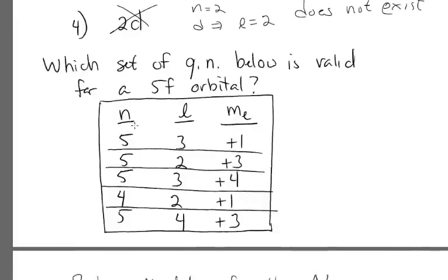For a 5f, the n value is five, so it could be one of these three, or it could be this one. The l value for an f orbital is three, which narrows it to these two possibilities. And then look at the m sub l values. m sub l for l equals three will be from negative three to positive three, so this one can't occur. So this is the correct designation for one possible 5f orbital.